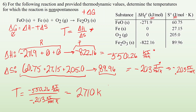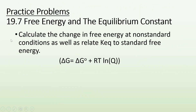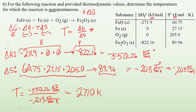Now determining whether it's above or below that temperature: delta H is negative and delta S is also negative. Since we're subtracting a negative and want a positive delta G for non-spontaneous, we need the T·delta S term to be large and positive — meaning high temperature. So the reaction is non-spontaneous at 2710 Kelvin or above. That's it — hope you found that helpful, see you in class.